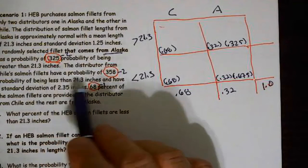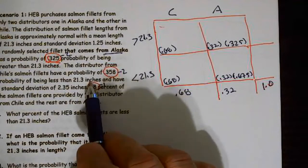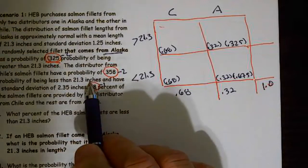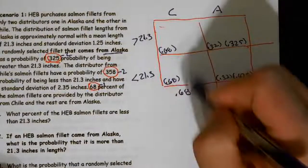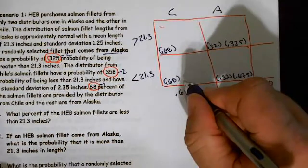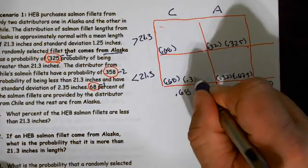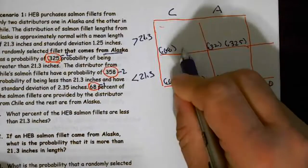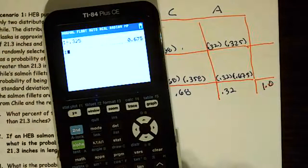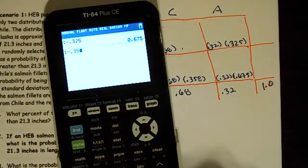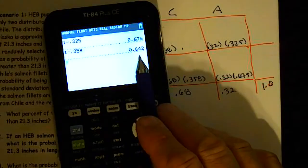Chile salmon fillets have a probability of 0.358 of being less than 21.3. So this is less than from Chile, so it's going to go right here — 0.358. And this will be 1 minus 0.358, that is 0.642.